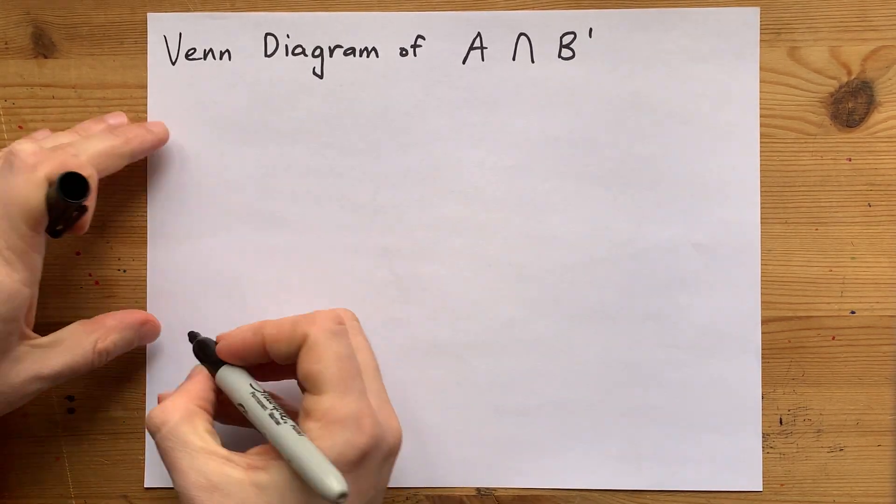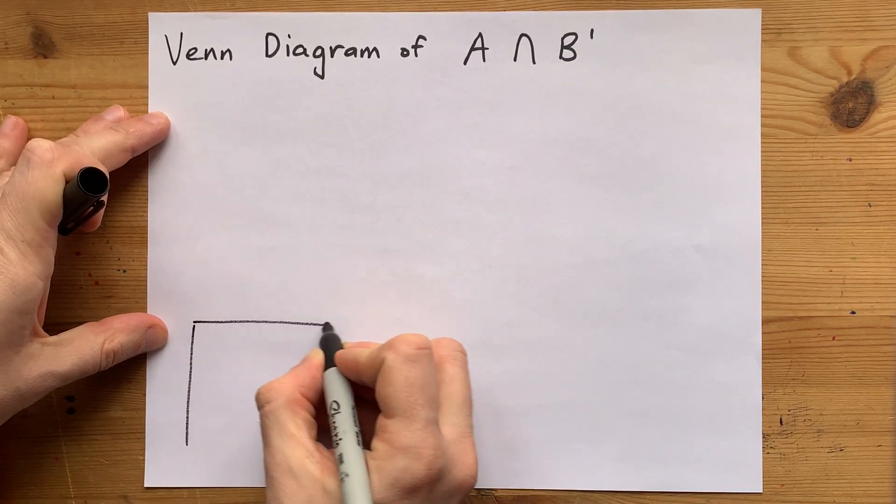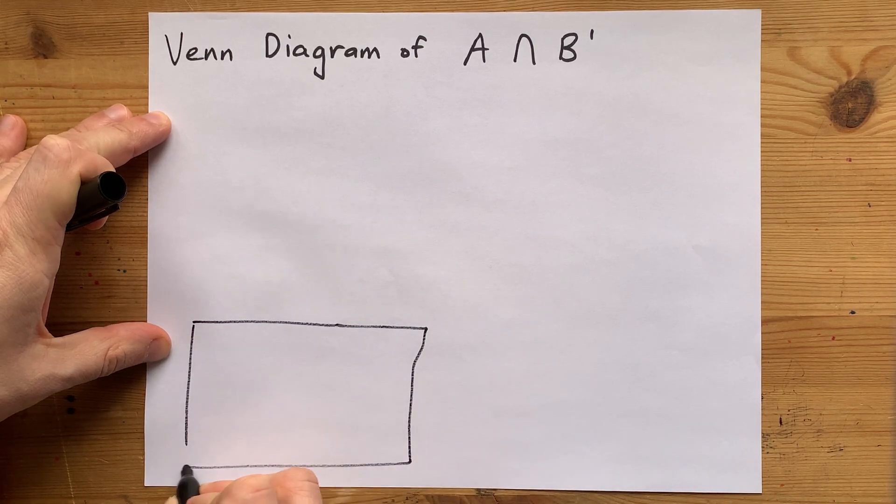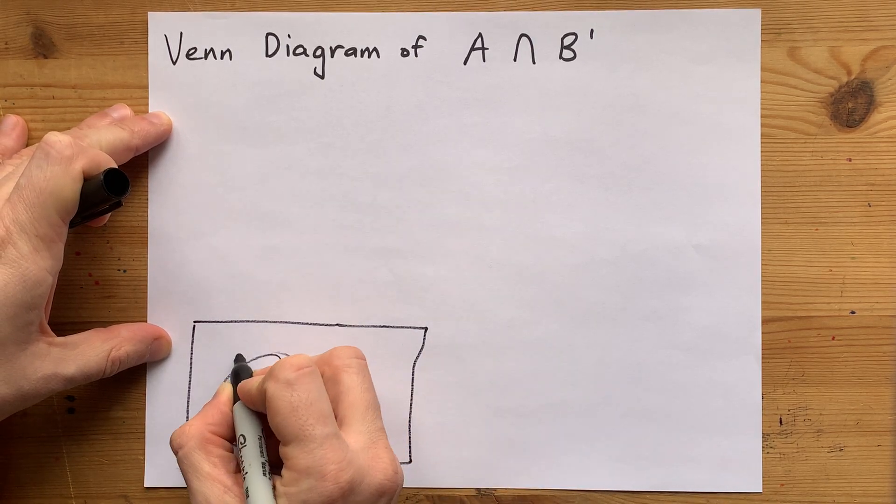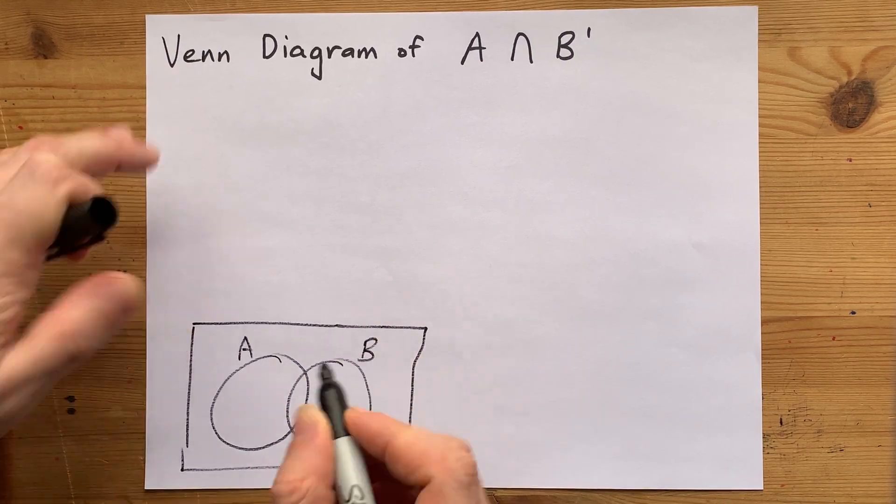Together, we're going to draw the Venn diagram for A intersect, not B. I'm just going to give myself that diagram where this is section A and this is section B.